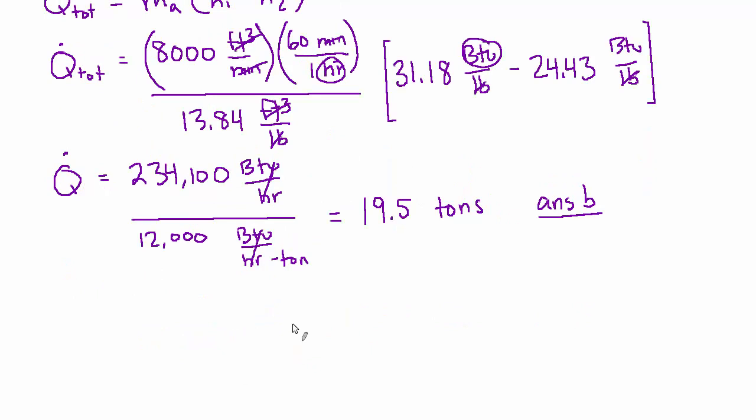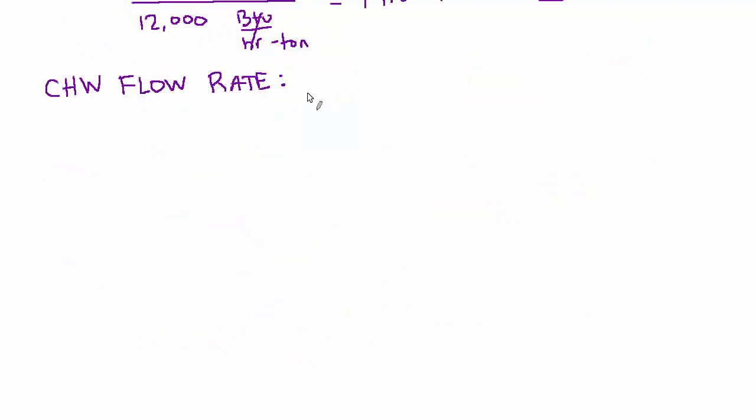So let's write an equation for the chill water flow rate. There's a handy rule of thumb that we can use, which says Q dot equals 500 times GPM times delta T. This is sort of the water side equivalent of 1.08 CFM delta T, which is often used for sensible heating or cooling on the air side. This is a similar rule of thumb that gives you the flow rate in GPM, provided the total heat transfer in BTUs per hour. So that's critical. The units for Q dot have to be in BTUs per hour for this to work. And delta T has to be in degrees Fahrenheit.